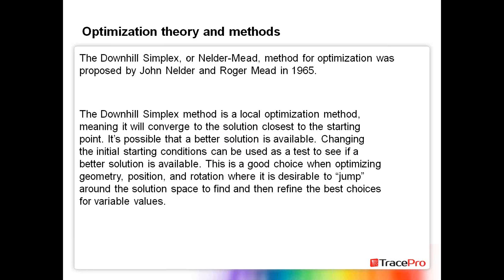The main method of optimization in TracePro is the downhill simplex or Nelder-Mead method, proposed by John Nelder and Roger Mead in 1965. It's a local optimizer and will converge to the solution closest to the starting point. It's possible that a better solution is available, and changing the initial starting conditions can be used as a test. This method is a good choice when optimizing geometry, position, rotation, or similar factors where it's desirable to jump around the solution space and then refine.